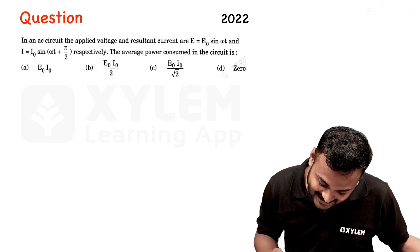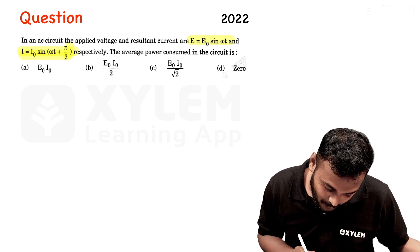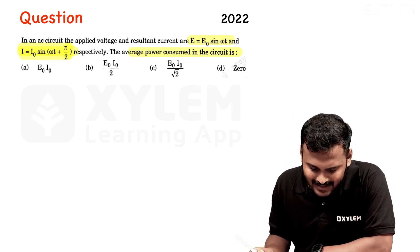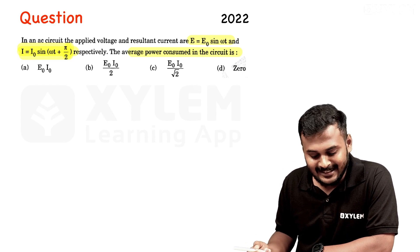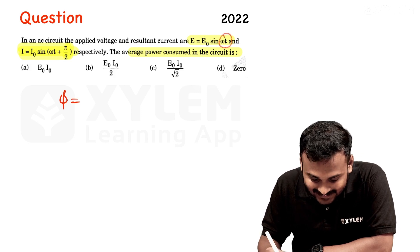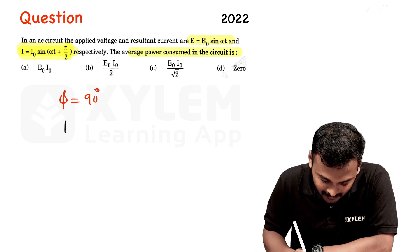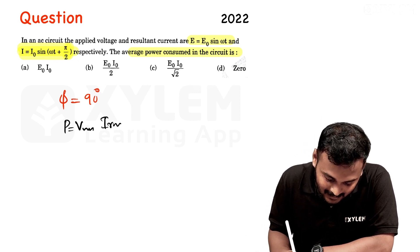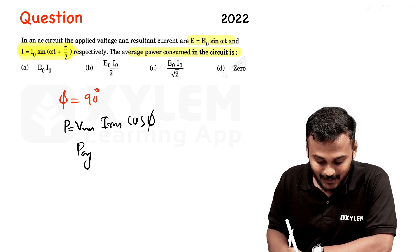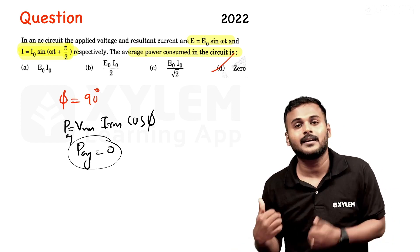The last question: AC circuit with applied voltage e equals e₀ sin(ωt) and current i equals i₀ sin(ωt + π/2). The average power — the phase difference φ equals π/2, which is 90 degrees. Average power P equals VRMS × IRMS × cos φ. Since cos 90° equals 0, the average power is completely zero. Option D is the right answer.